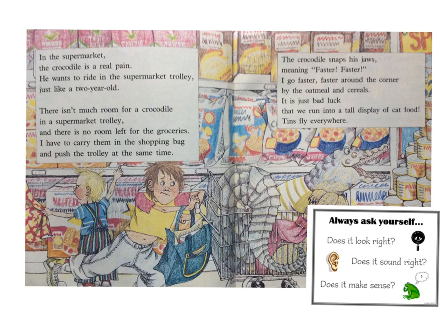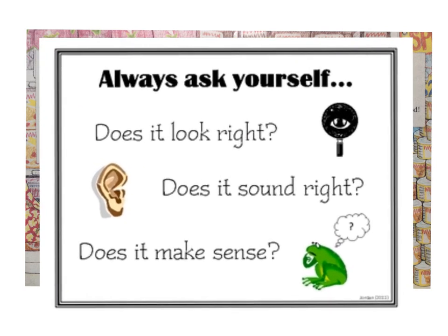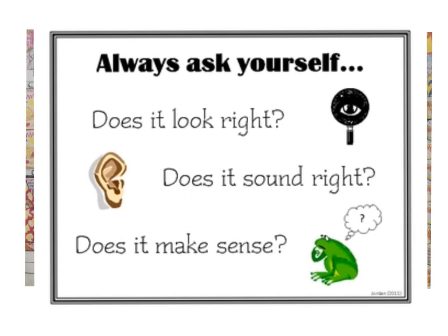A good reader uses all three of these strategies when they're reading. They think about 'does it look right?' — looking at the beginning, middle, and end sounds of words, and the pictures. They think about 'does it sound right?' — is that the way we talk, is that the way we put sentences together? And they think about 'does it make sense?' — thinking about the story and the things in it, what kinds of words would make sense. When you're reading, see if you can use these three things to help you when you get stuck on a word: does it look right, does it sound right, does it make sense?